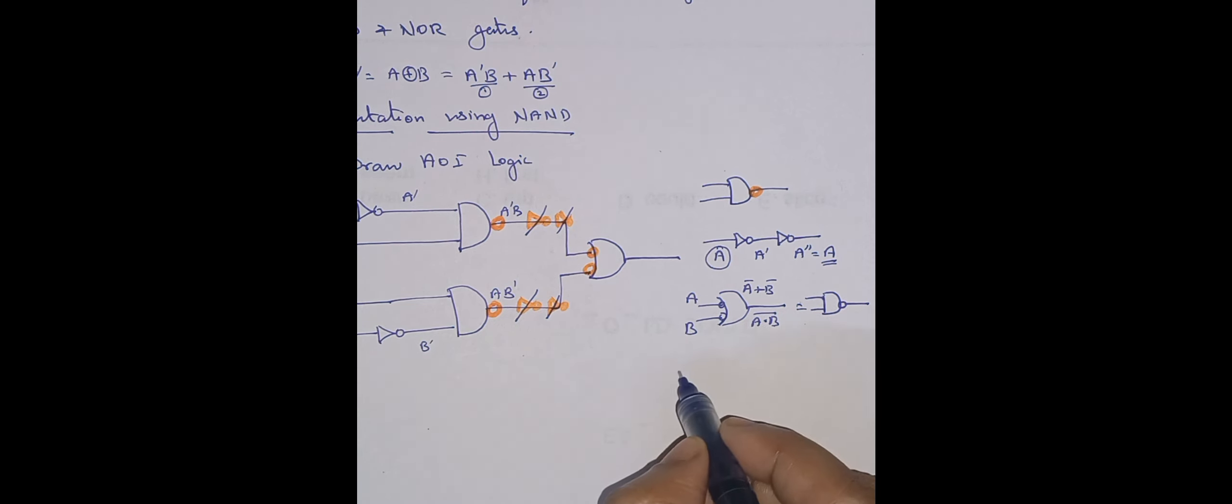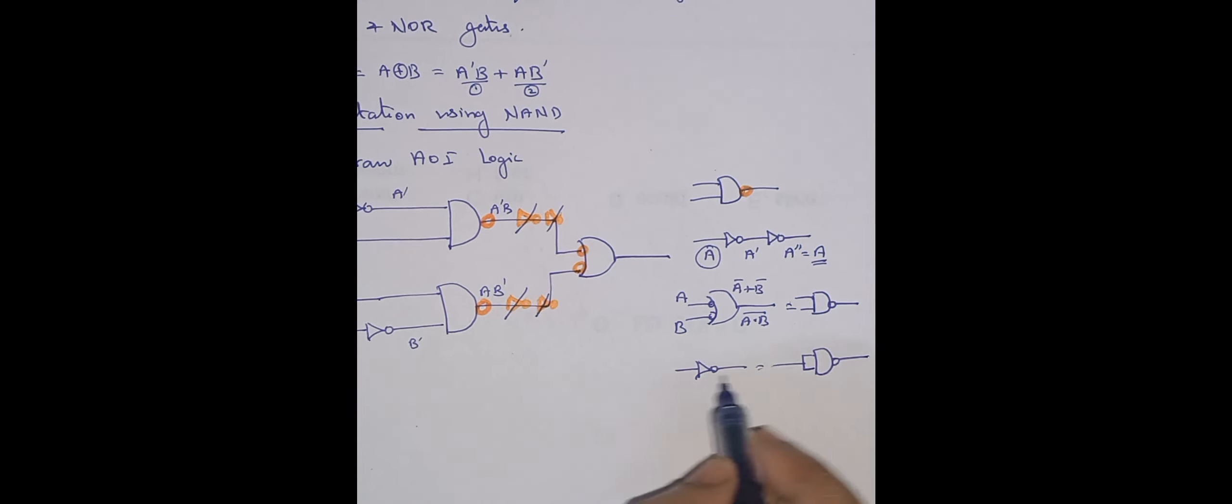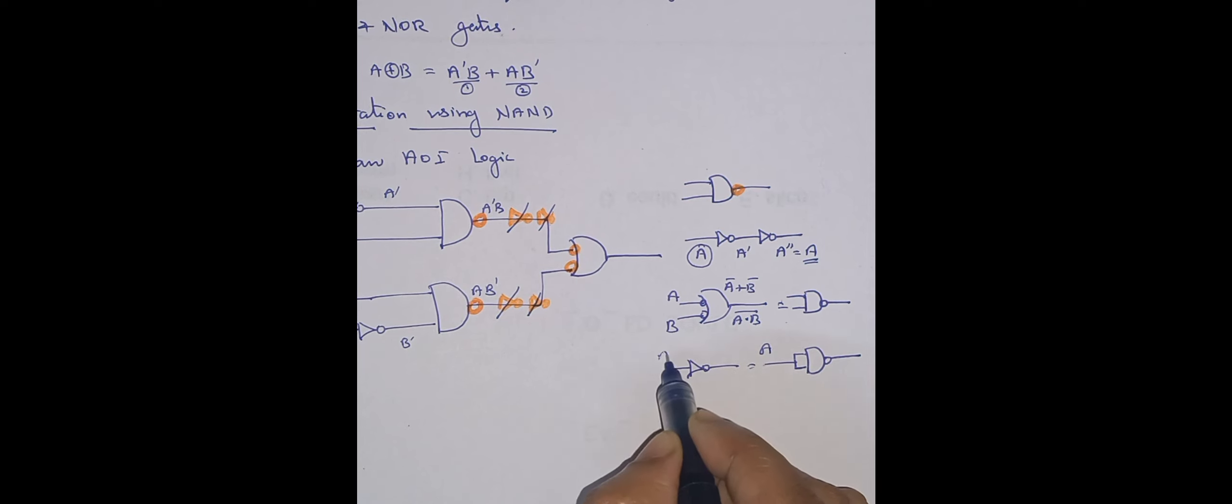Similarly, another thing, if I find an inverter, this is replaced by this NAND gate. Suppose if I get input A, output is A dash. Here, both inputs of this NAND gate are AA. So A dot A is equal to A only. Then output is A bar. You will get this output as A bar.